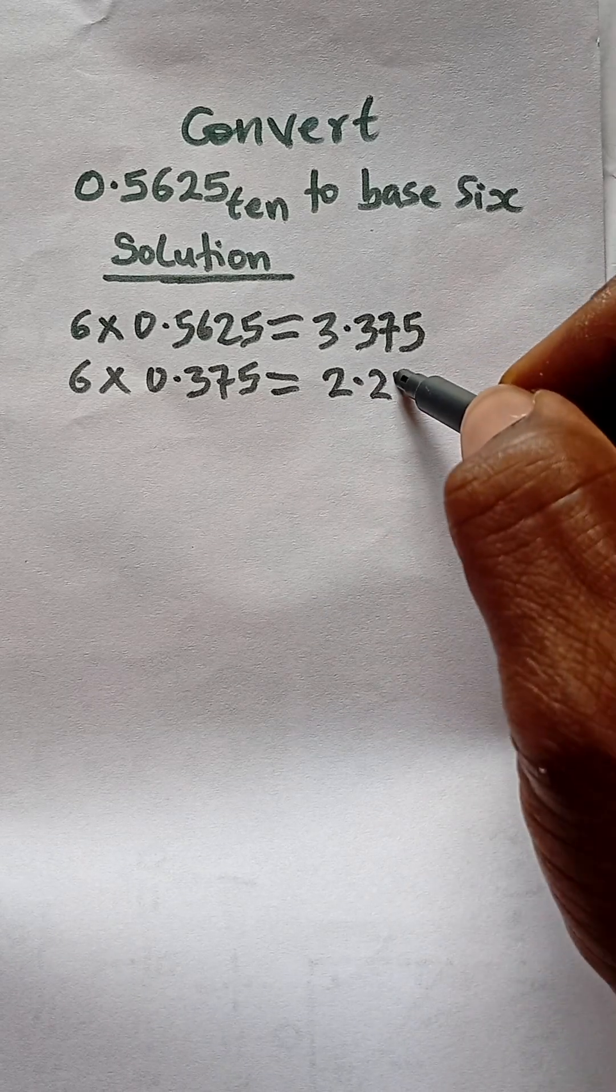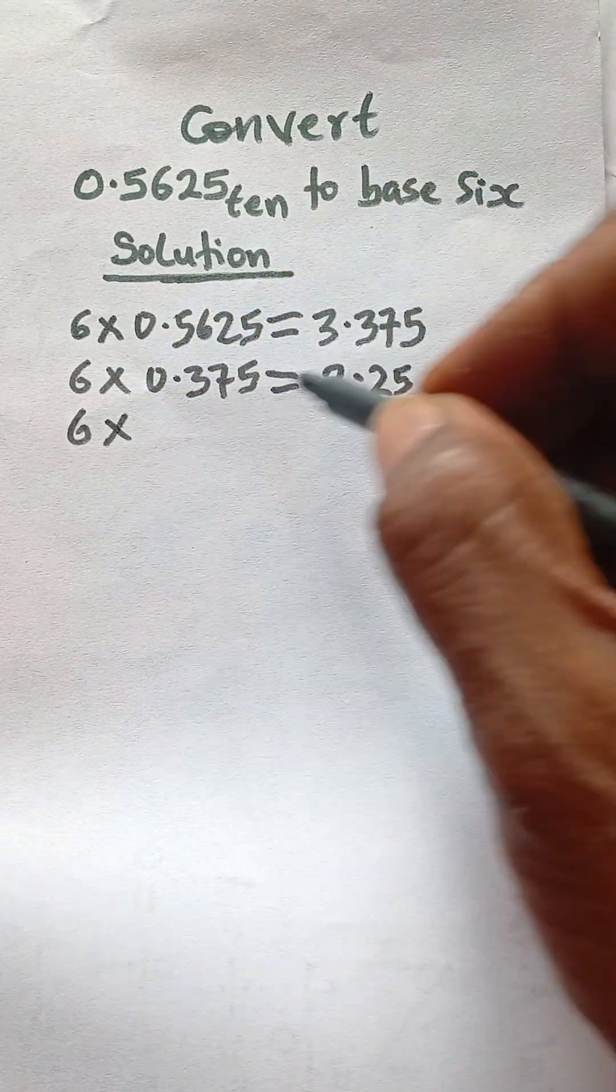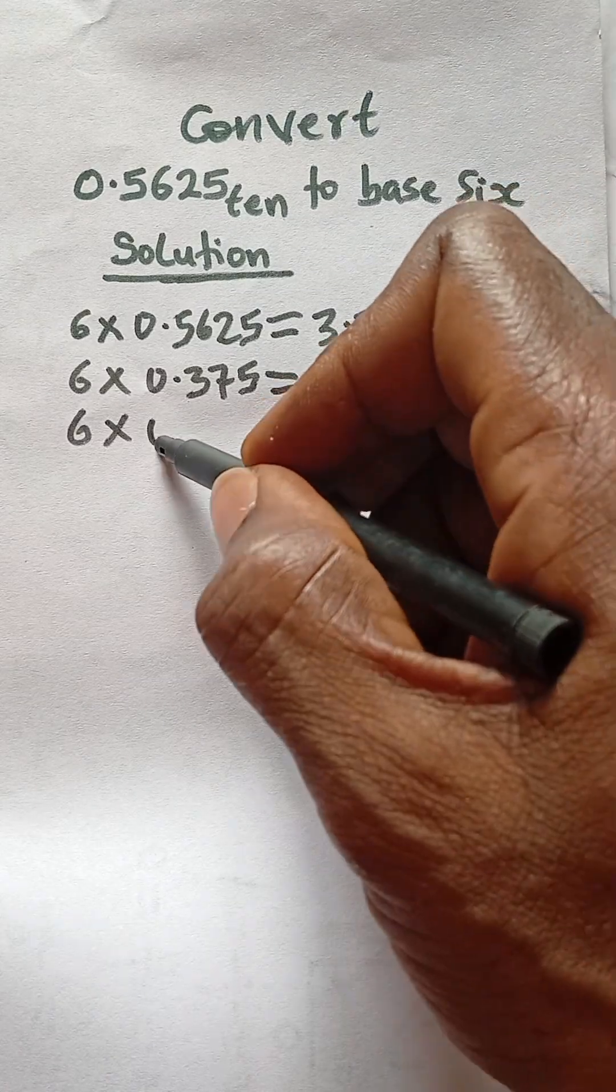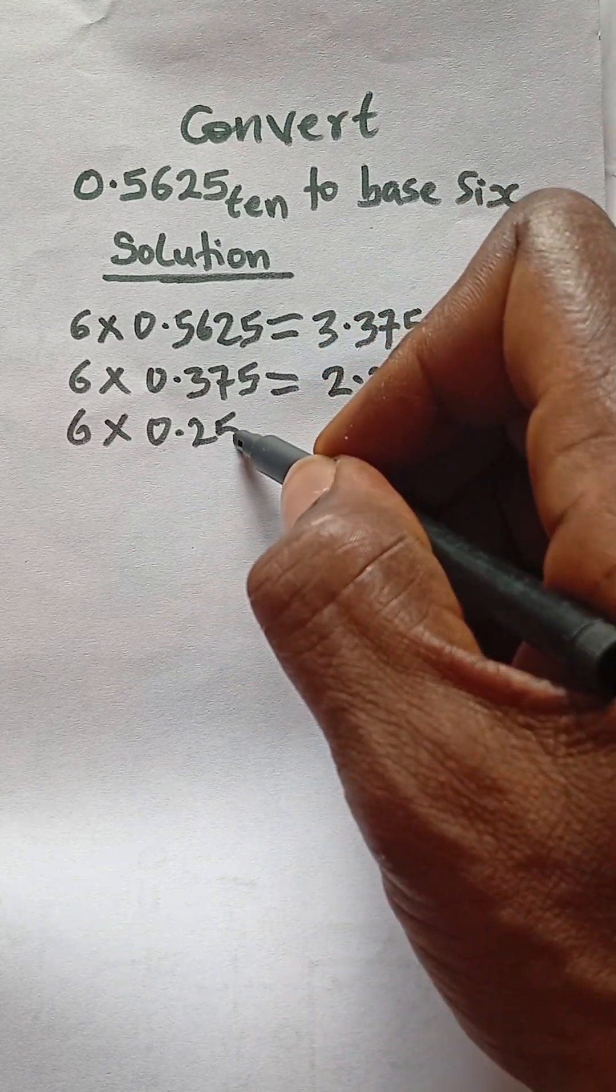Then you take the 6 again and multiply by the decimal part which is 0.25, and that will give us 1.5.